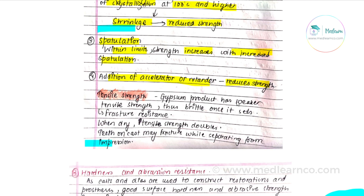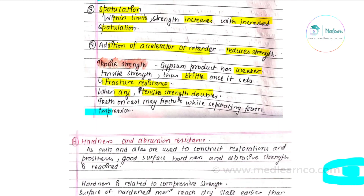Tensile strength is weak, meaning it is a brittle material. When the cast is dry and set, teeth on the cast may fracture while separating from the impression. This fracture is the main consequence of it being brittle — because tensile strength is lower.